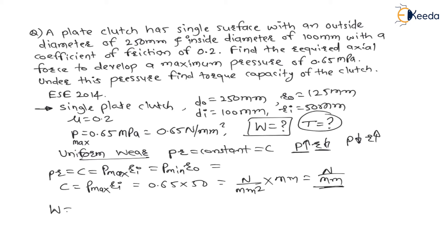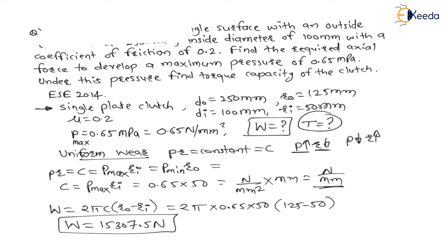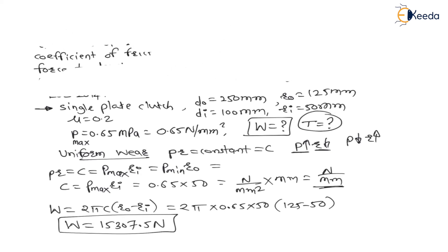As per uniform wear theory, the axial load W = 2πC(Ro − Ri). Substituting values: W = 2π × (0.65 × 50) × (125 − 50). Calculating this gives normal load W = 15,307.5 N. This is the answer to the first part of the question.